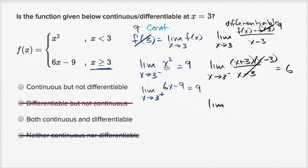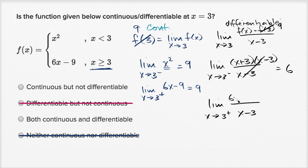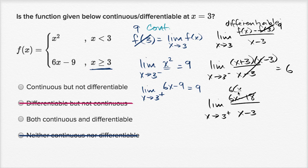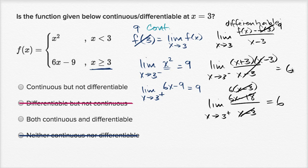Now for the right-hand limit: f of x is six x minus nine, minus f of three which is nine, giving six x minus 18, which equals six times x minus three. Dividing by x minus three gives six. The limit from the left and the right both equal six, so the derivative exists and equals six. This means the function is both continuous and differentiable at x equals three.